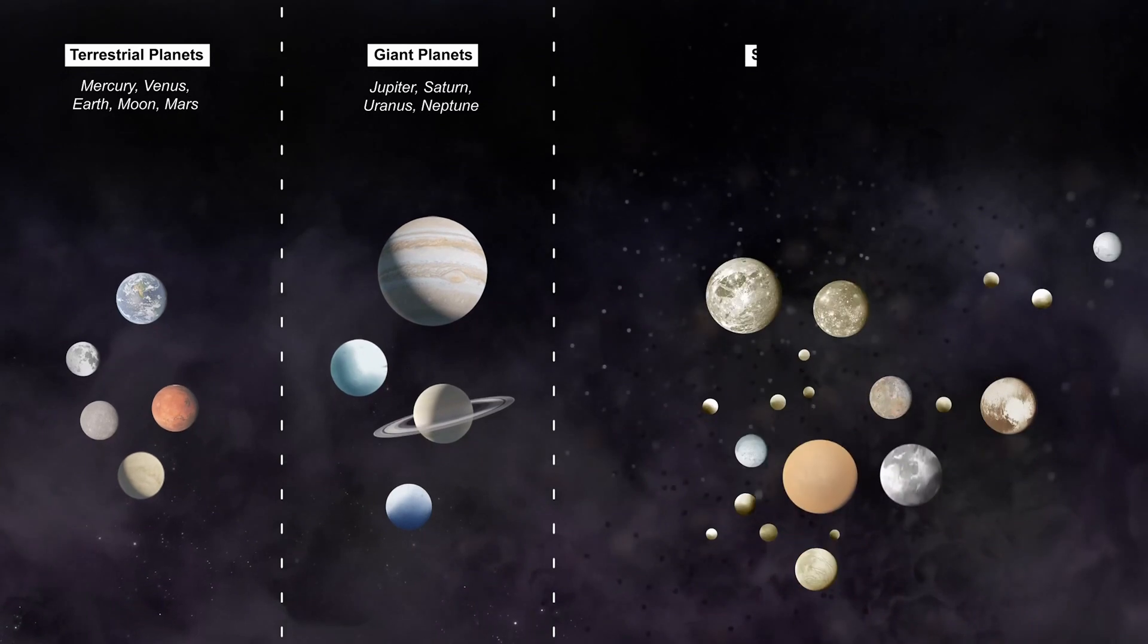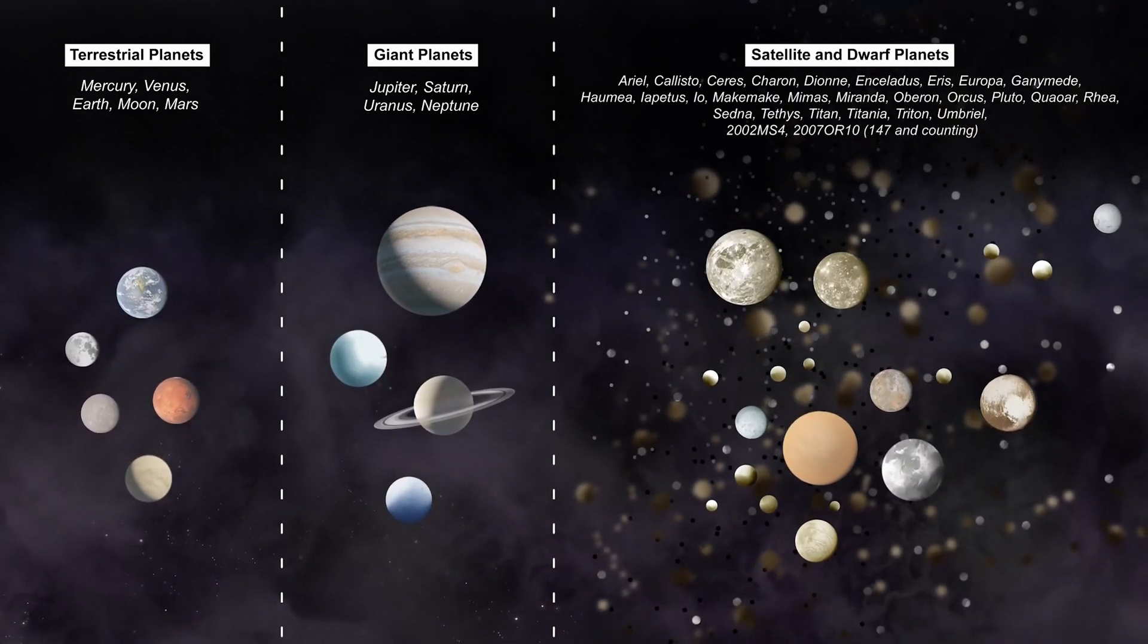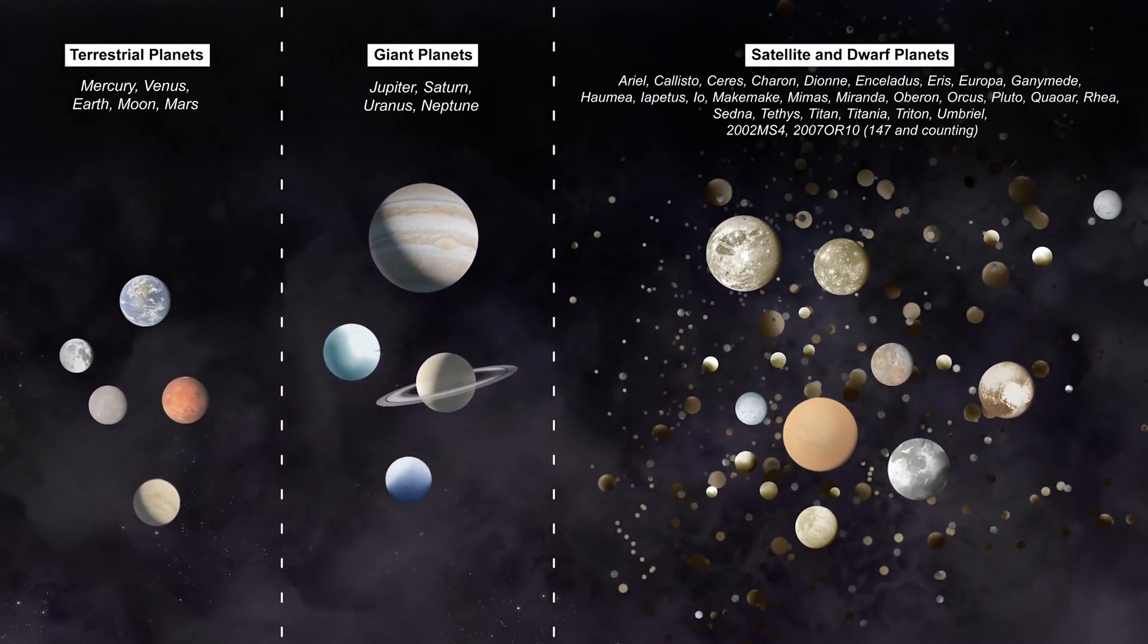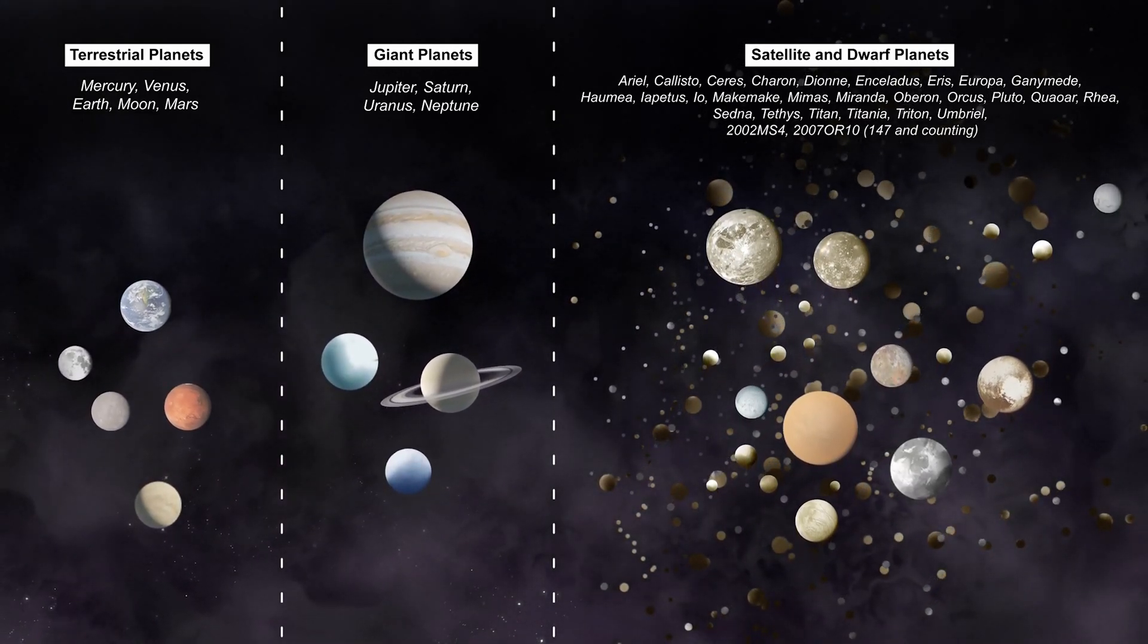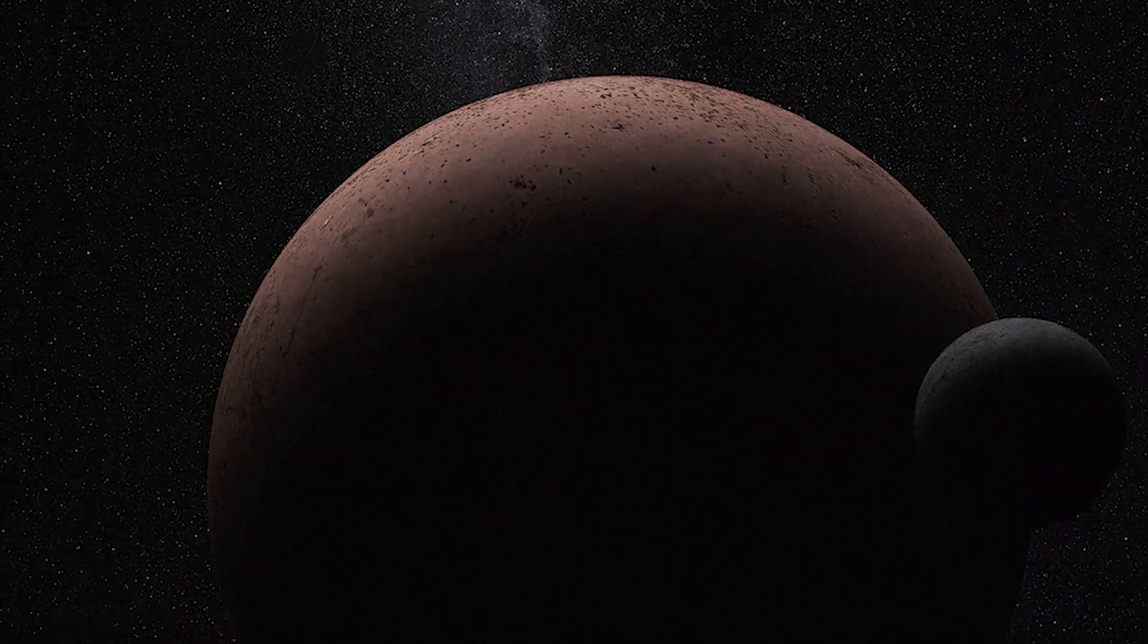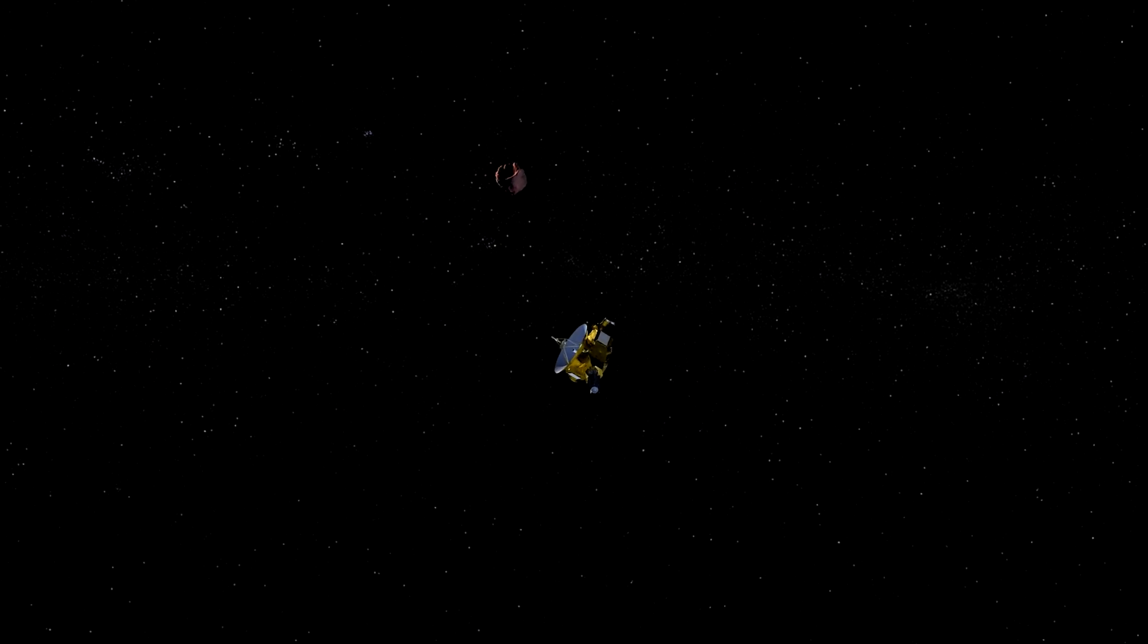Planetesimals, like Arrokoth, are the remnants of planetary formation, the actual building blocks of the solar system. But as common as they are, we really don't know that much about them because we had never explored an unevolved world up close. Until New Horizons flew by Arrokoth, and that changed everything.